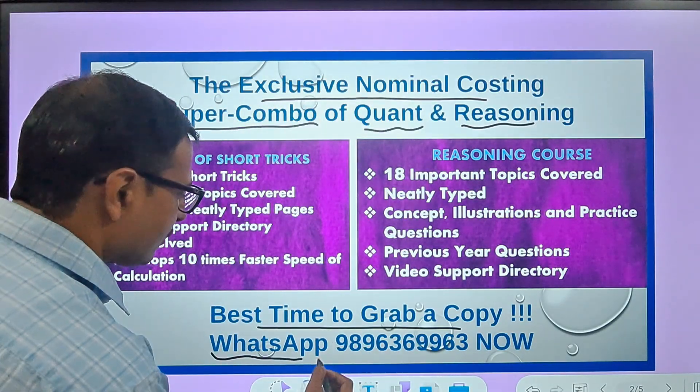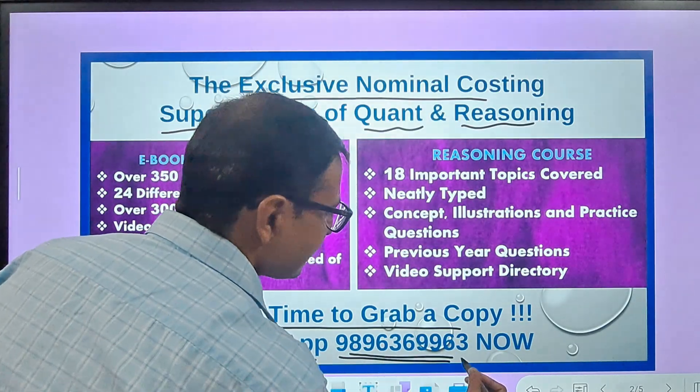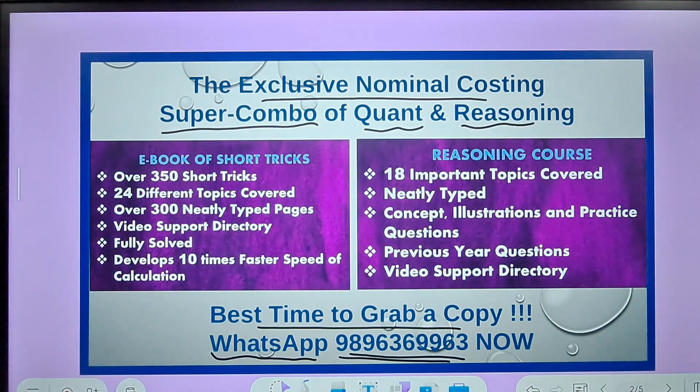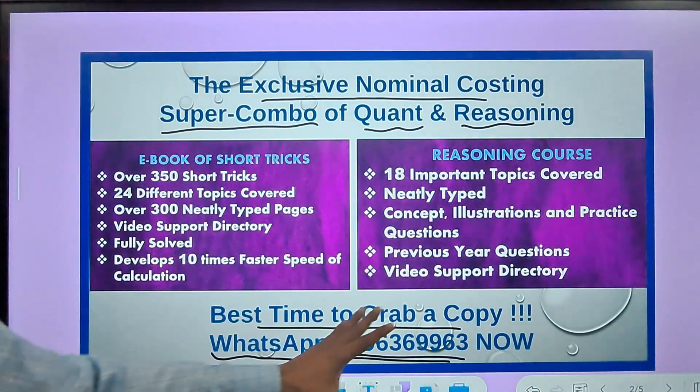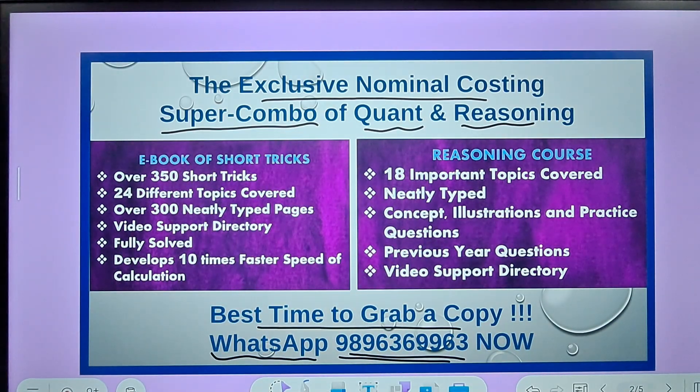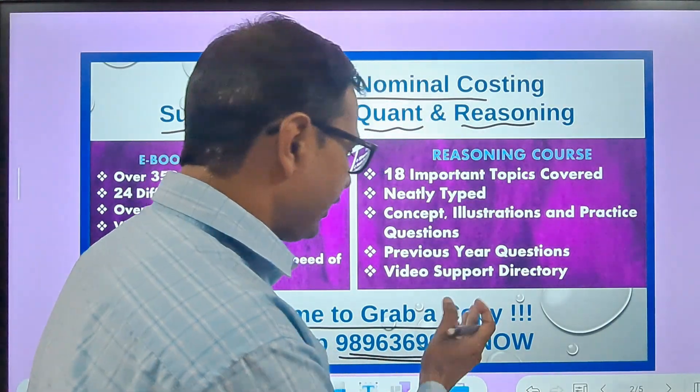You can send me a message on WhatsApp 9896369963. If you are the parent of a child studying in class 4-5, this is going to help you a great deal in developing those competencies which are required for success in school olympiads as well.